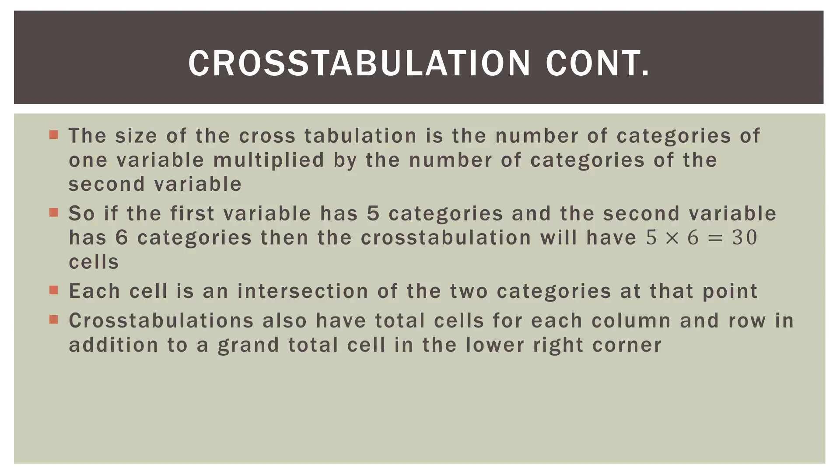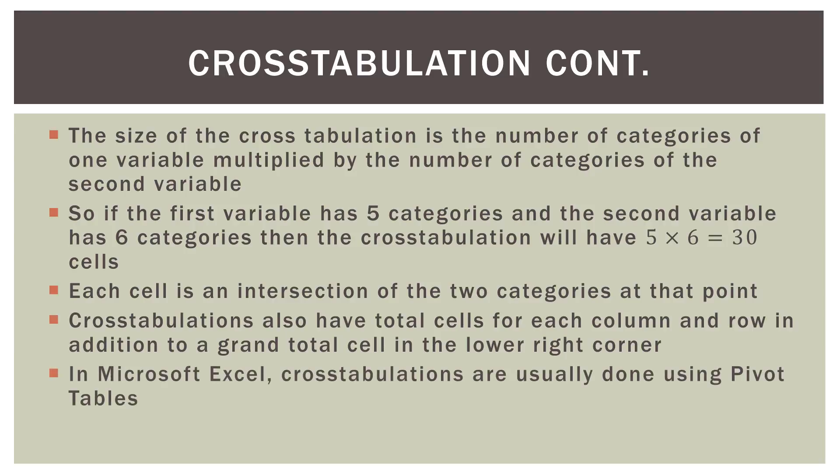Cross tabulations also have total cells for each column and row, in addition to a grand total cell in the lower right corner. In Microsoft Excel, cross tabulations are usually done using pivot tables. This video is not about how to do pivot tables in Excel specifically, but every screenshot shown here was done that way.